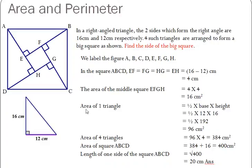Now, we turn our attention to the area of one triangle. The area of one triangle is given by the formula half base times height. So, this is equal to half, multiply by 12, multiply by 16, and this is equal to half times 192, which is equal to 96 cm².